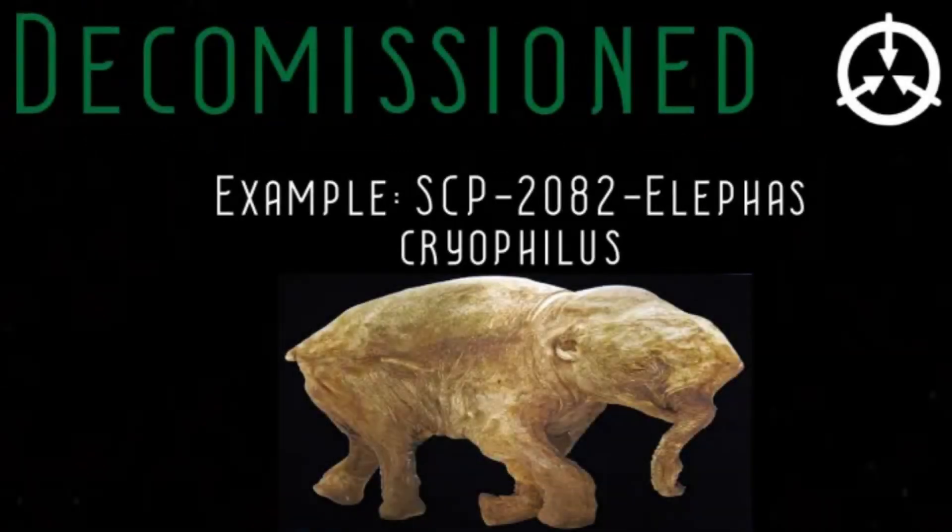Decommissioned SCPs are anomalies that have been intentionally destroyed or stripped of their anomalous properties by the SCP Foundation. As the Foundation usually tries to contain rather than neutralize anomalous objects, this object class is only used when it is not possible to fully contain an anomaly, or when excessive expenditure of resources is required to keep an anomaly in containment.